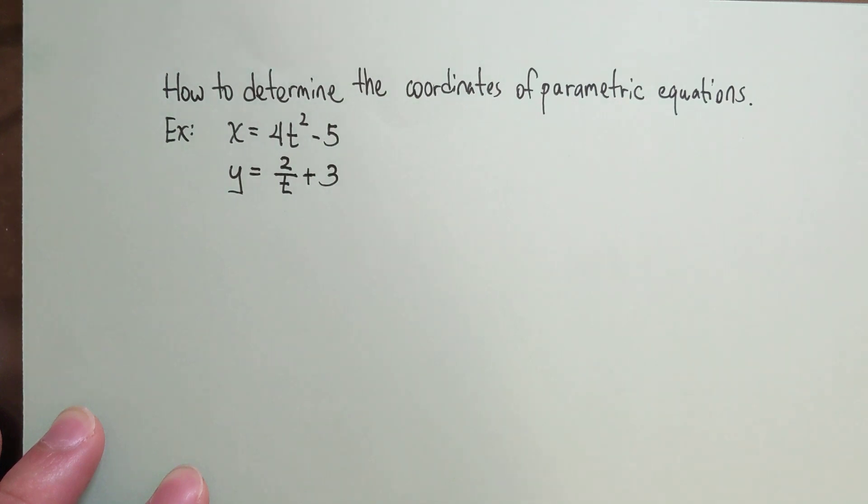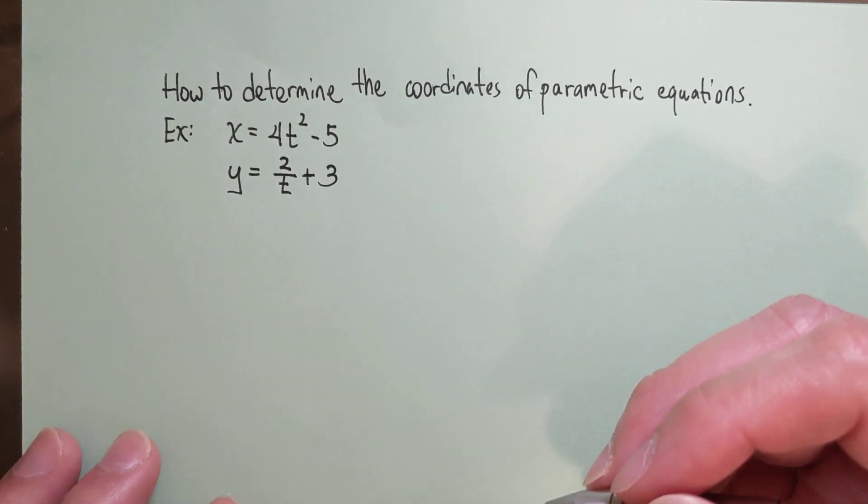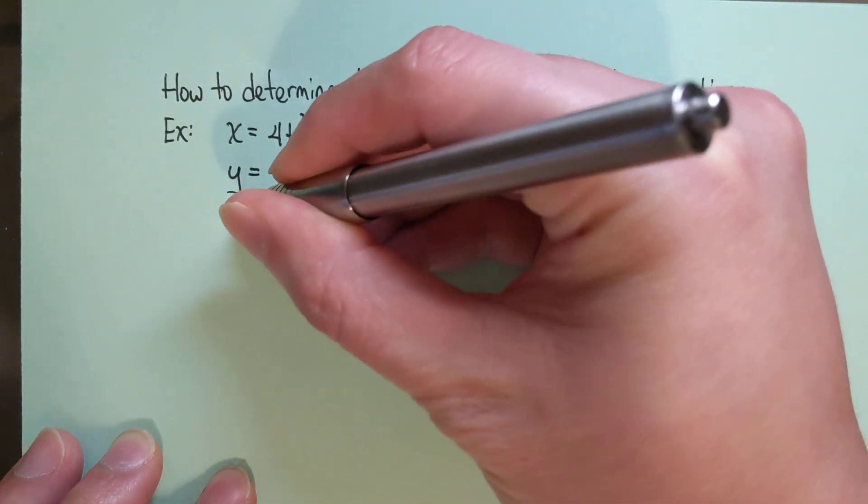As you can see, they both have t. Now in order to figure out the coordinates, they must give you one thing. They have to give you what t is. So if you're going to graph parametric equations, you need to figure out what t you're going to use.